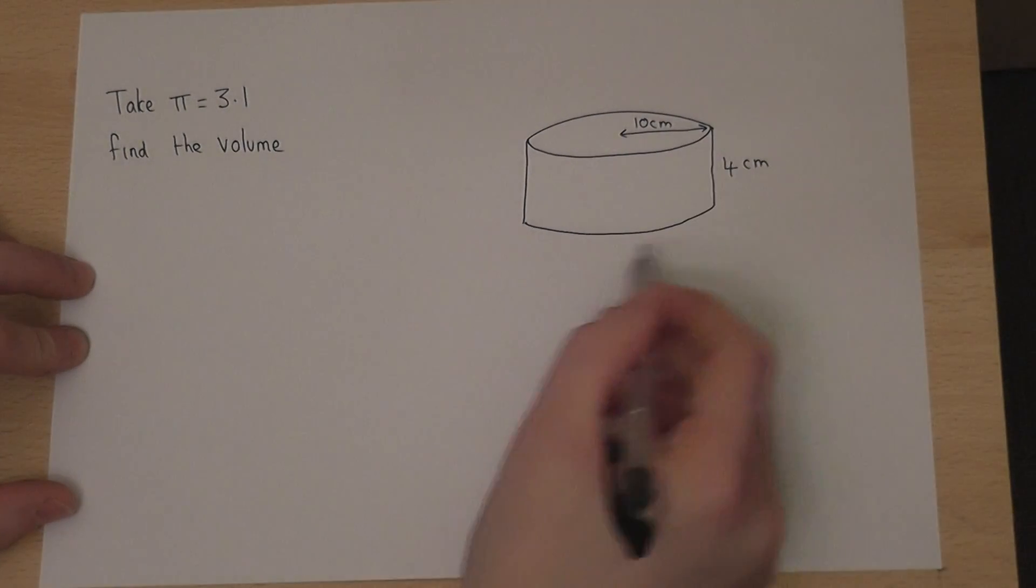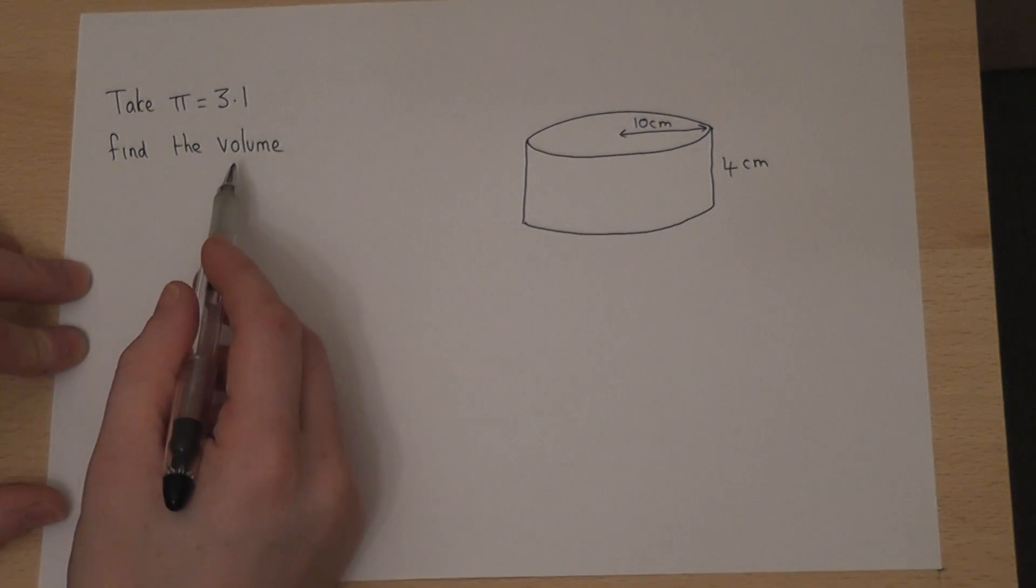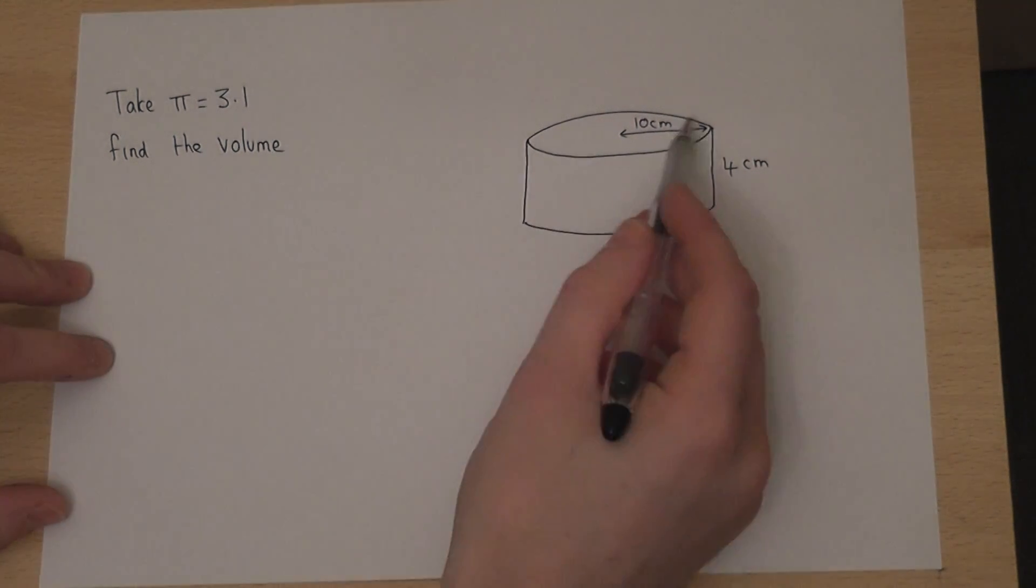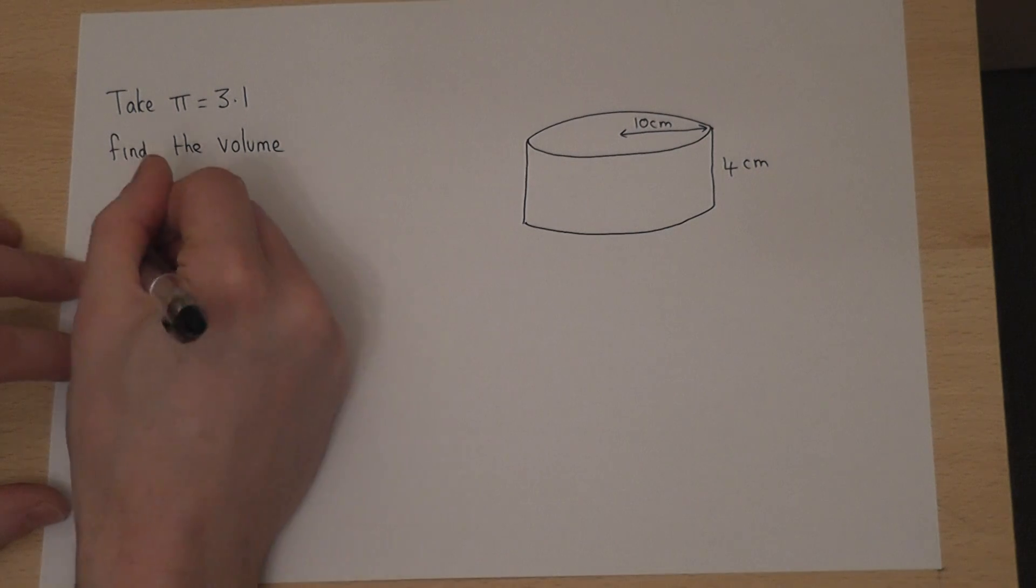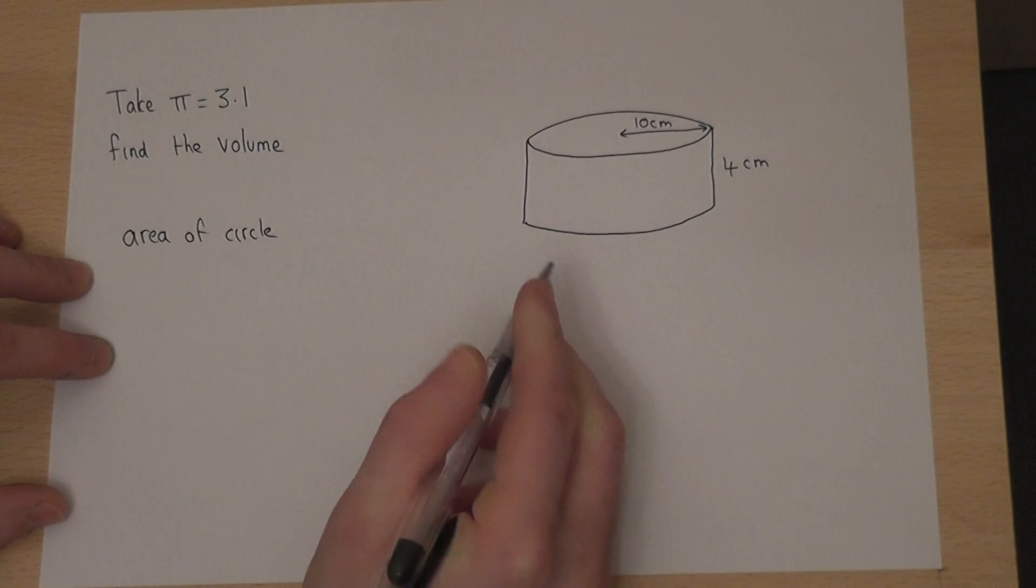In this question we're given a cylinder, and we're asked to find the volume. Now to find the volume of a cylinder, we'd first of all find the area of the circle, which is the face.